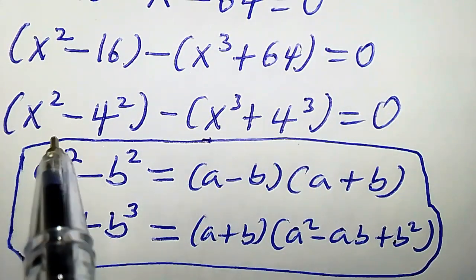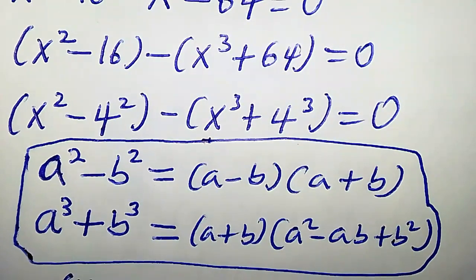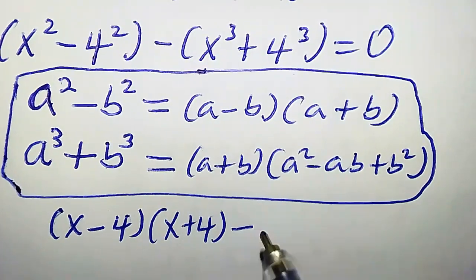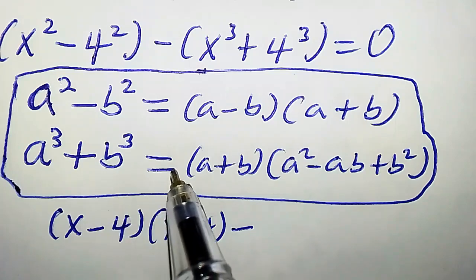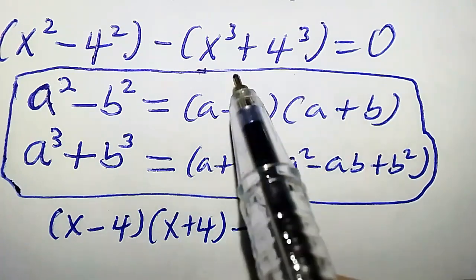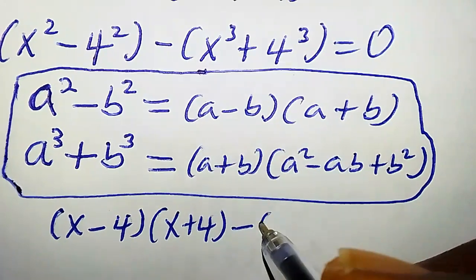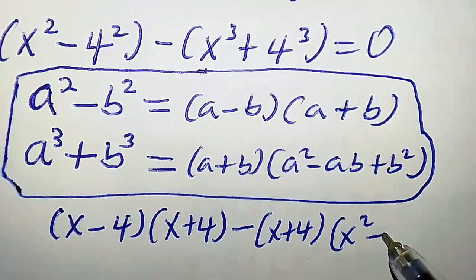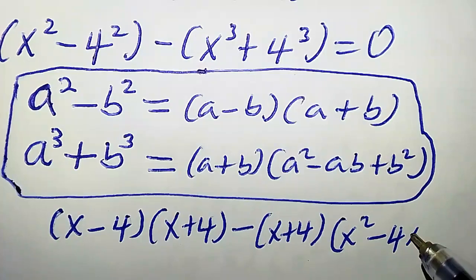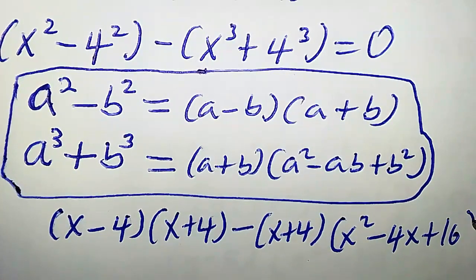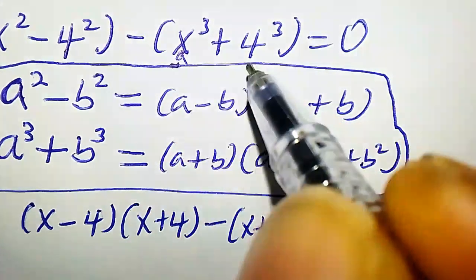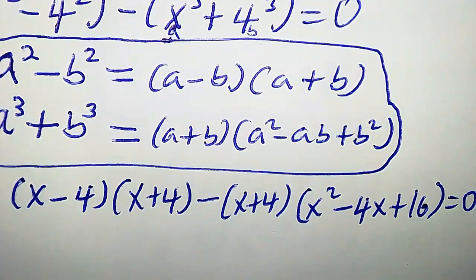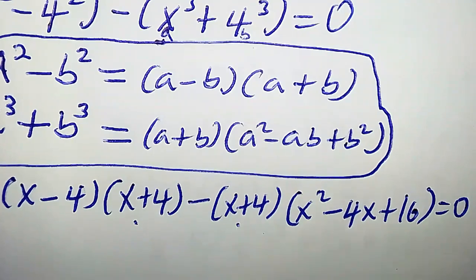If you apply the difference of squares property to x squared minus 4 squared, you get x minus 4 times x plus 4. If you apply the sum of cubes property to x cubed plus 4 cubed, you get x plus 4 times x squared minus 4x plus 16, because x is a and 4 is b.